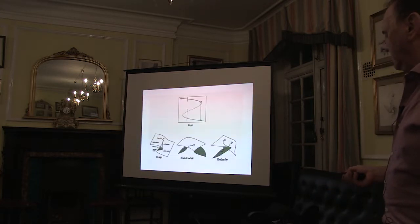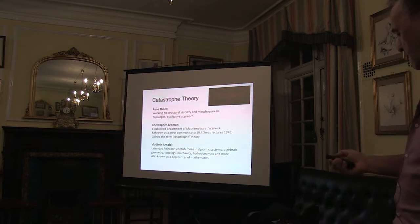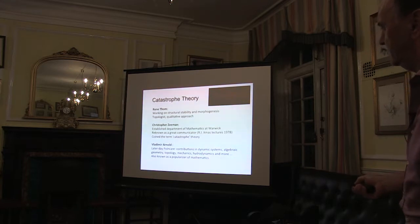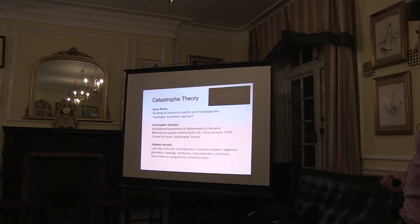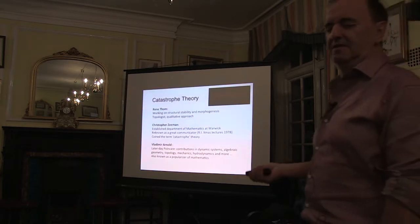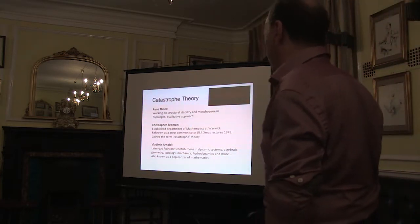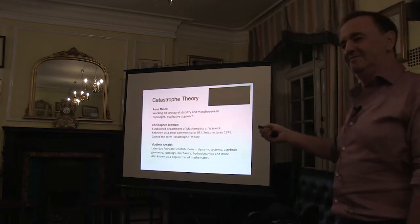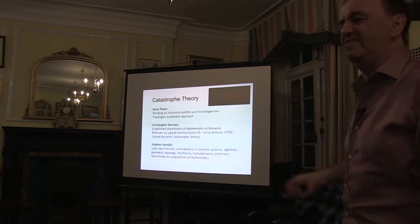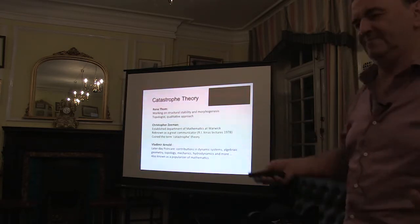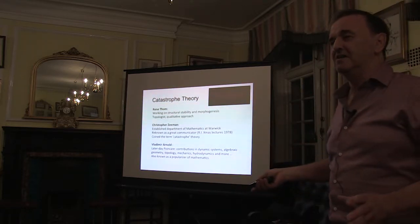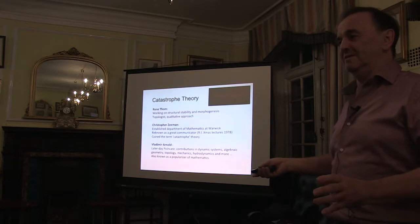There's one other key figure, Vladimir Arnold, who is a sort of latter-day Poincaré — a Russian who contributed to topology and many other areas. Arnold, rather like Einstein, had lots of memorable quotes. One of my favourite, as an applied mathematician-physicist: he said mathematics is really just a branch of physics where the experiments are very cheap.